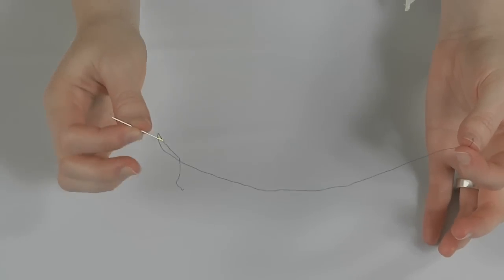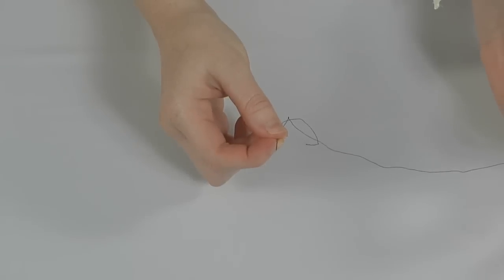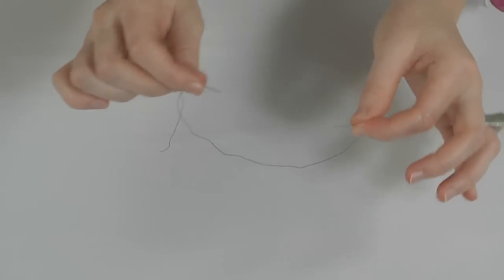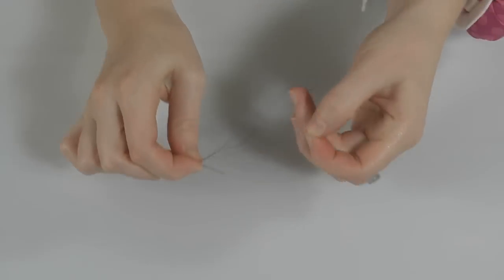To start, take a threaded needle and bring the end of the thread and the needle tip together, forming sort of a circle.